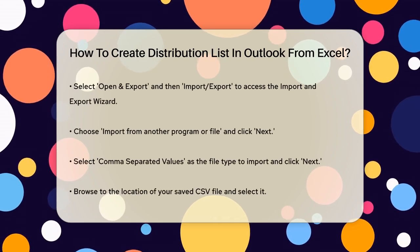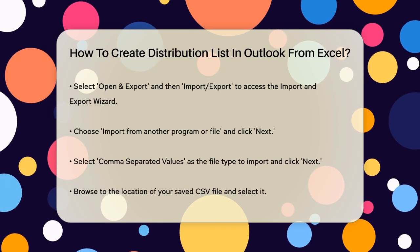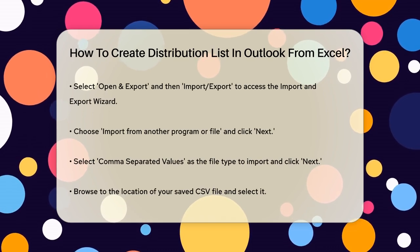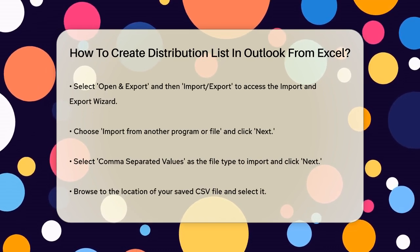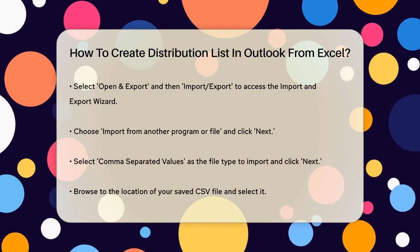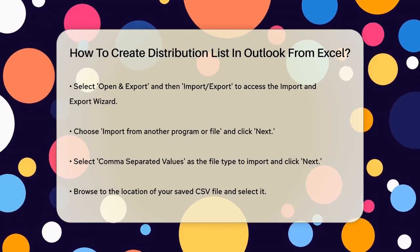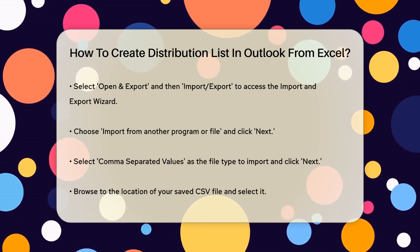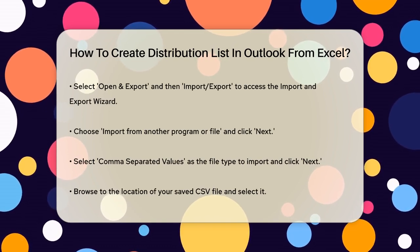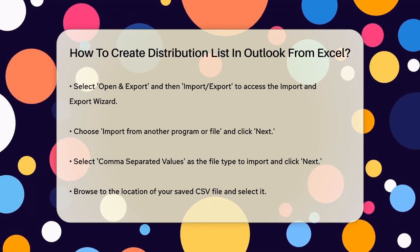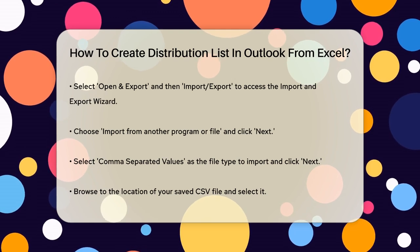Next, open Microsoft Outlook. At the top of the Outlook window, click on the File tab and select Open & Export, then choose Import-Export. This will open the Import & Export wizard. Here, select Import from another program or file and click Next.